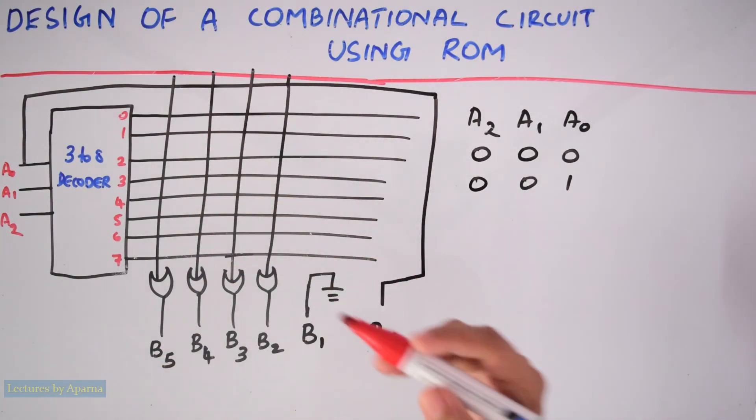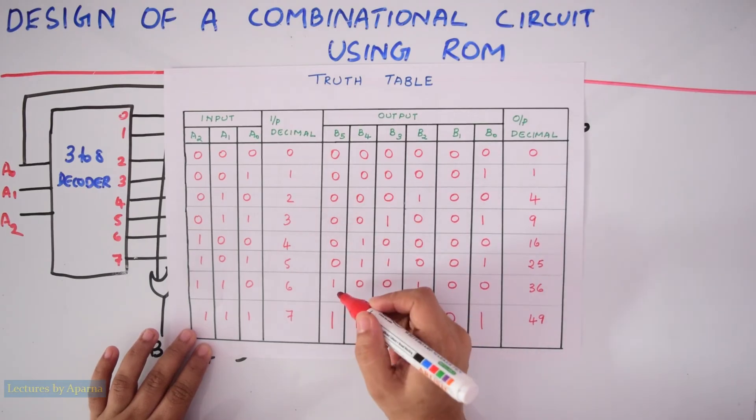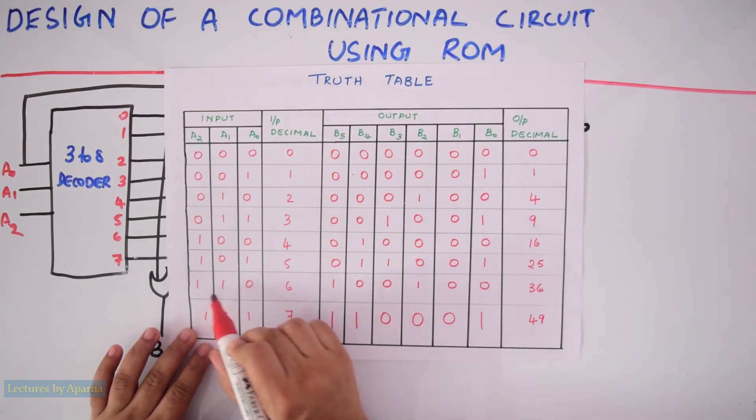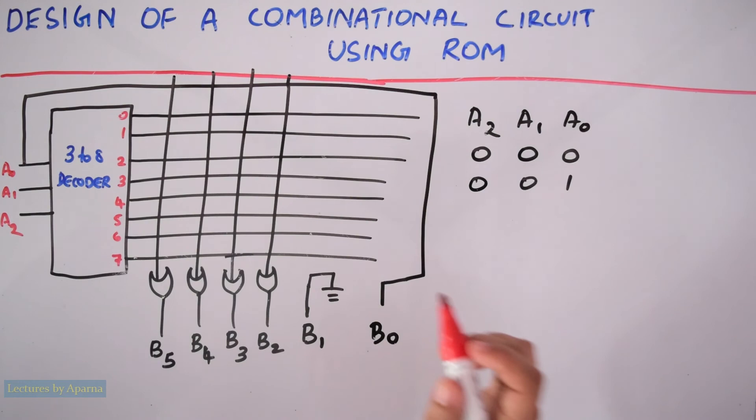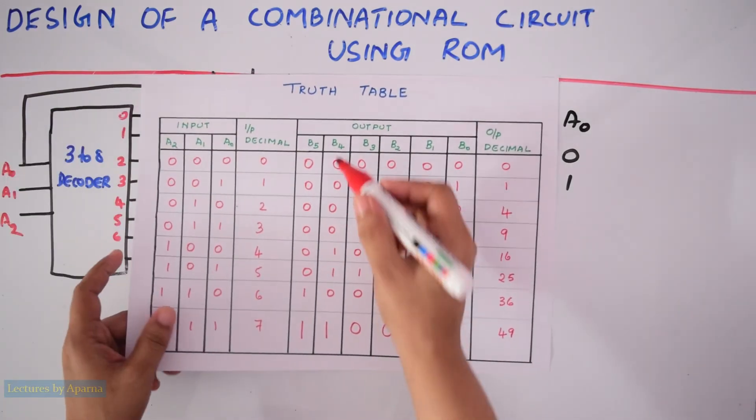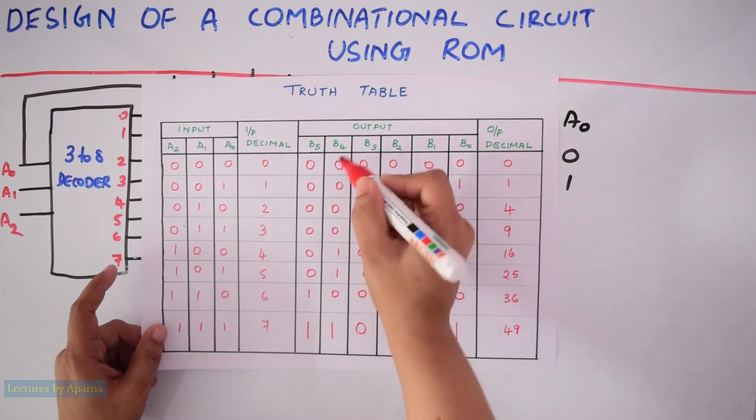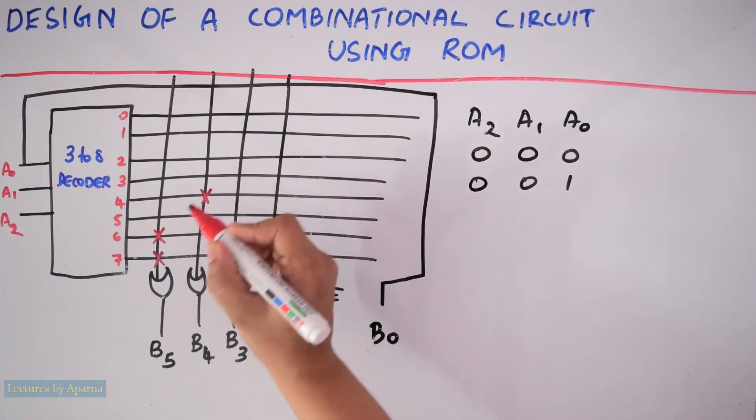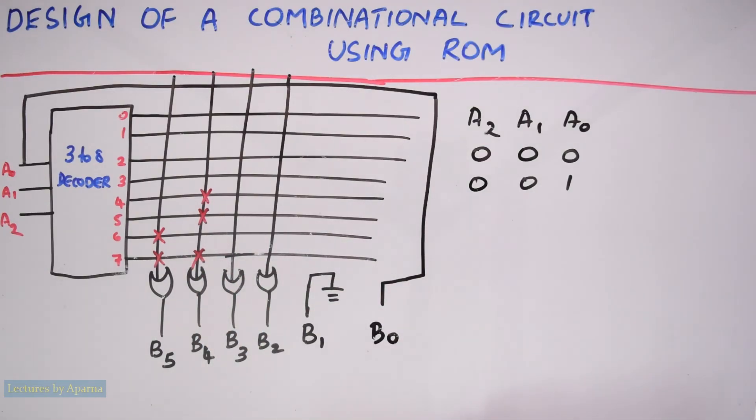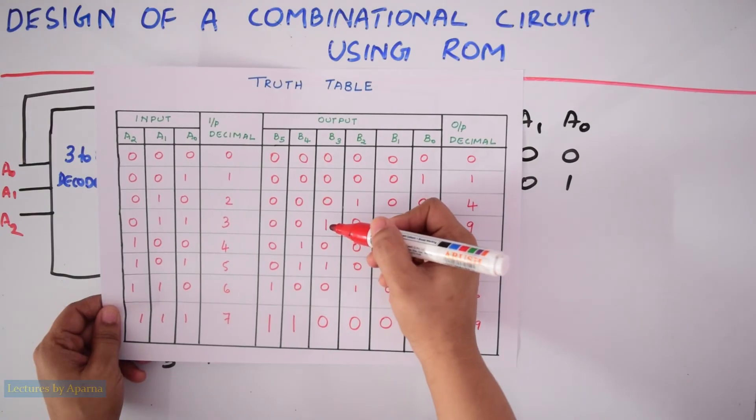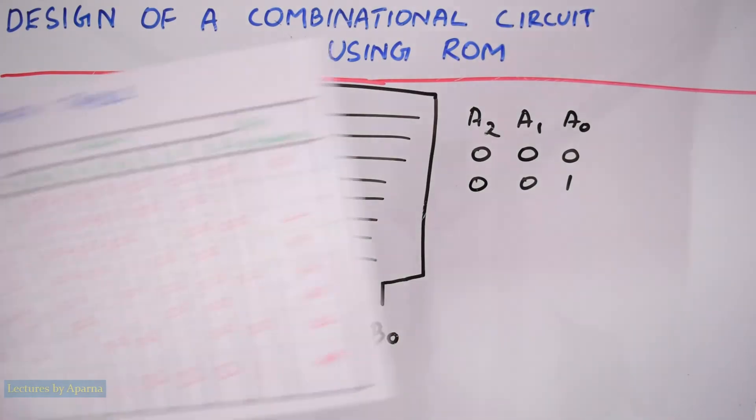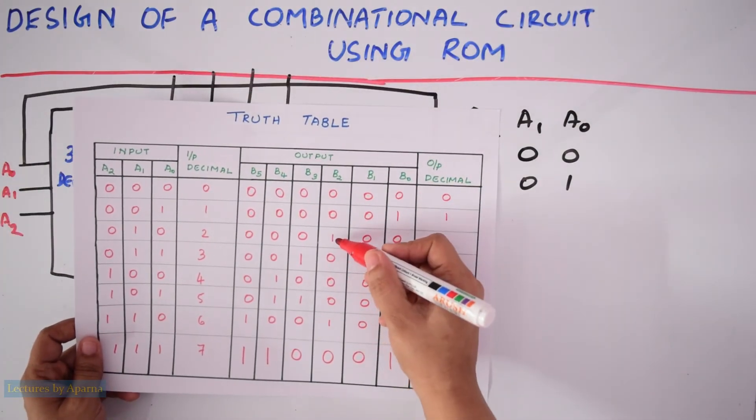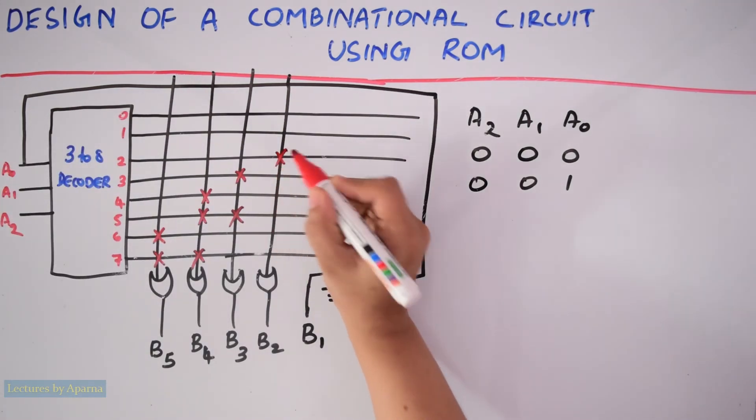Now consider the output function B5. Looking at the truth table, we can see that B5 is logic 1 at these two input combinations. So at line 6 and at line 7, you have to put an into mark. Now put into mark for line 4, line 5, and line 7 in B4. Next, for B3, put into mark at line 3 and 5. For B2, put into mark at line 2 and 6.